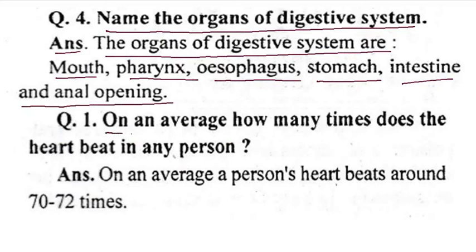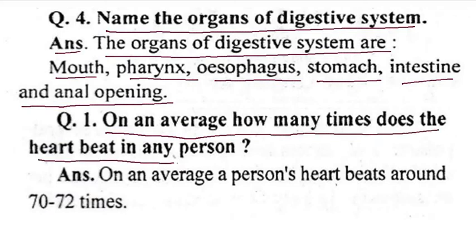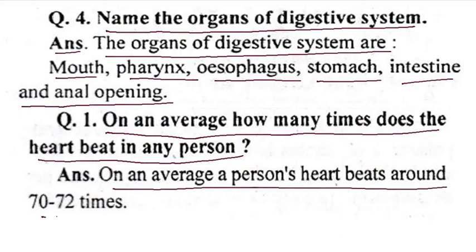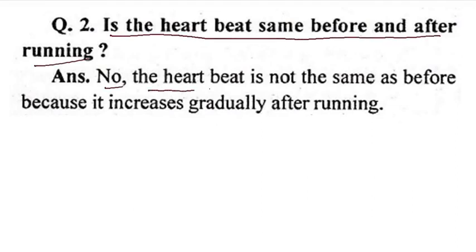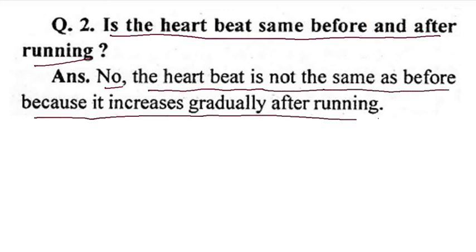On average, how many times does the heart beat in a person? On average, a person's heart beats around 70 to 72 times per minute. Is the heartbeat the same before and after running? No. The heartbeat is not the same as before because it increases gradually after running.